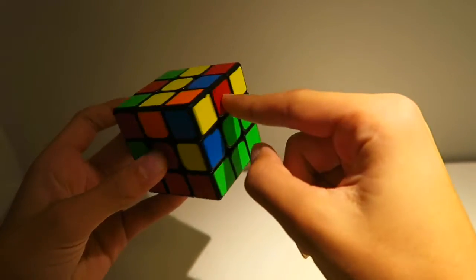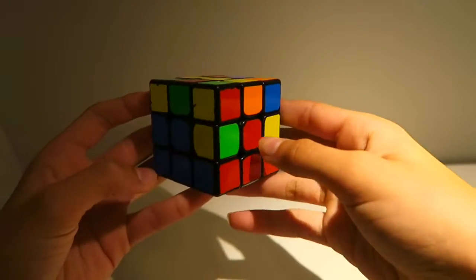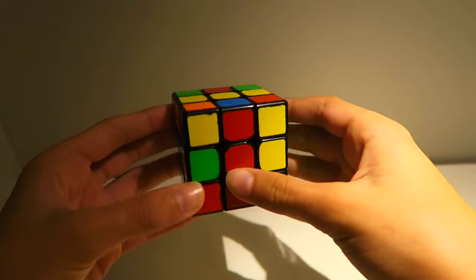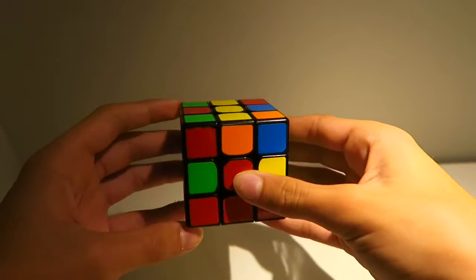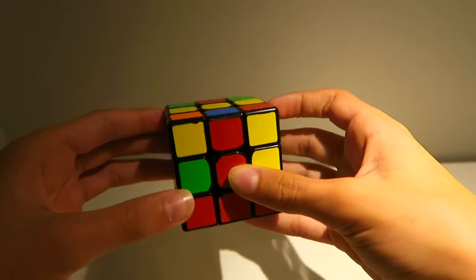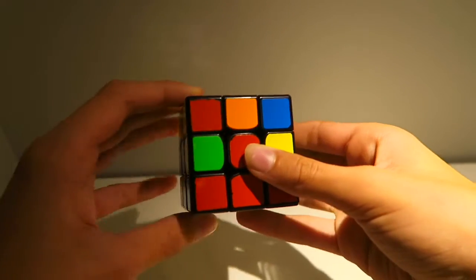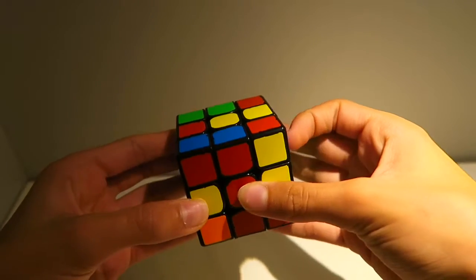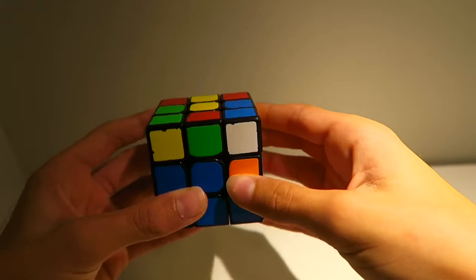We have this edge here which is blue and red. Blue and red here, and that's the slot. Again, we line it up and put it to the side. Basically, we bring it away from the corner and slot, bring the corner and slot up, bring the edge back, and bring the corner back down.